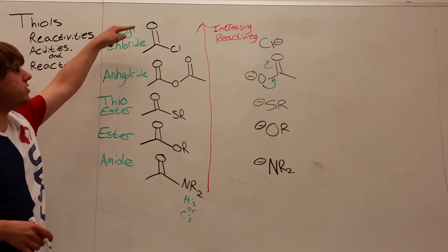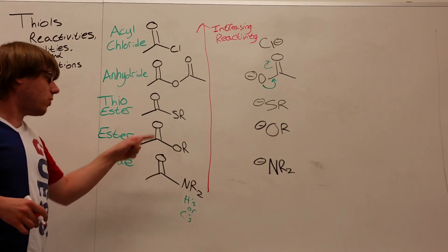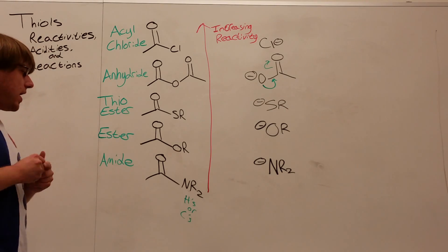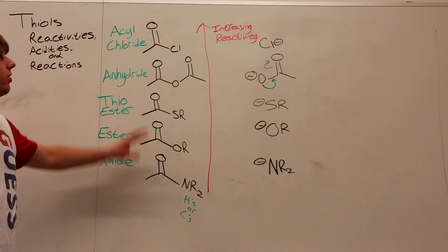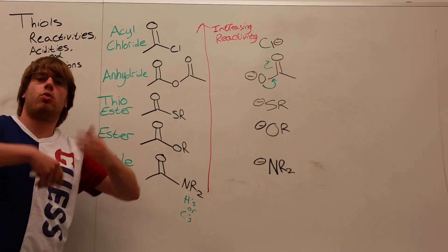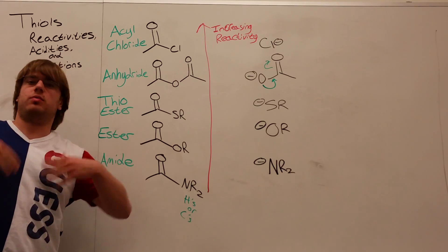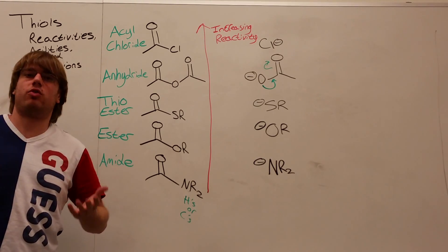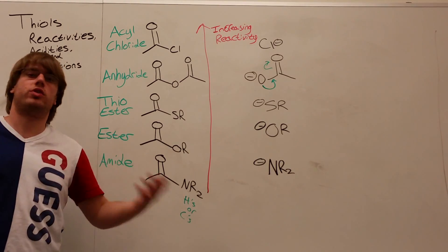And conversely, as we go down, we're decreasing reactivity, or increasing stability, meaning an amide is more stable than an acyl chloride, which makes sense. If you're more reactive, you're not going to be staying the same for long. You're going to react, and so you're not stable.